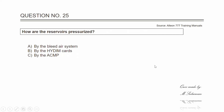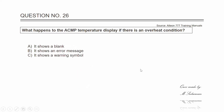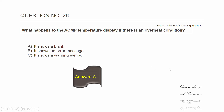Question twenty-five: how are the reservoirs pressurized? The answer is A — by the bleed air system. Question twenty-six: what happens to the ACMP temperature display if there is an overheat condition? The answer is A — it shows a blank.